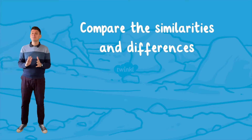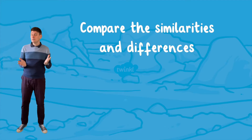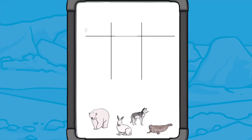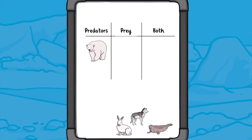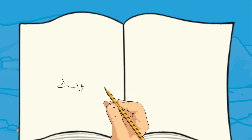You could also ask your children to compare the similarities and differences between the animals — for example, which animals live in burrows, or which animals are predators and which are prey. You could even sort them into categories. And why not get your children to make a poster for one of the animals that you could display in your classroom?